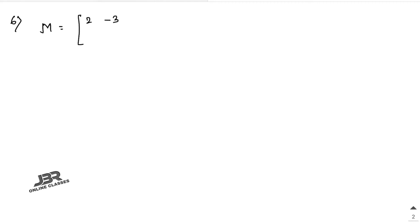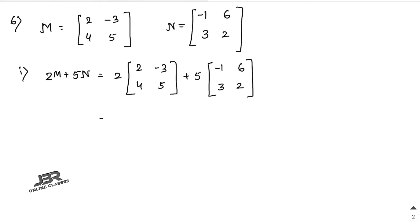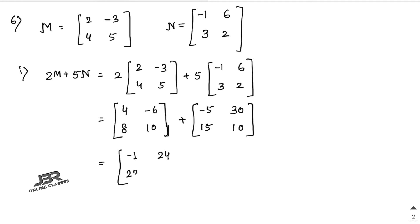Sum number 6: M equals [2, -3, 4, 5] and N equals [-1, 6, 3, 2]. Number 1: find 2M + 5N. Multiply 2 with M: [4, -6, 8, 10]. Multiply 5 with N: [-5, 30, 15, 10]. Now add: 4+(-5)=-1, -6+30=24, 8+15=23, 10+10=20.